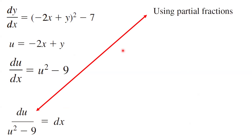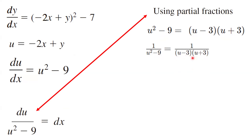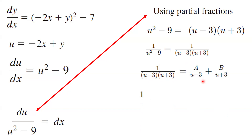To solve this differential equation, we are going to apply the method of partial fractions. u squared minus 9 can be written as u minus 3 times u plus 3, so 1 divided by u squared minus 9 is 1 divided by u minus 3 times u plus 3. This can be written as the sum of two fractions: A divided by u minus 3, plus B divided by u plus 3.